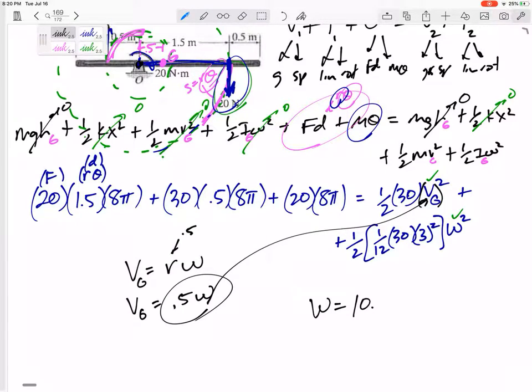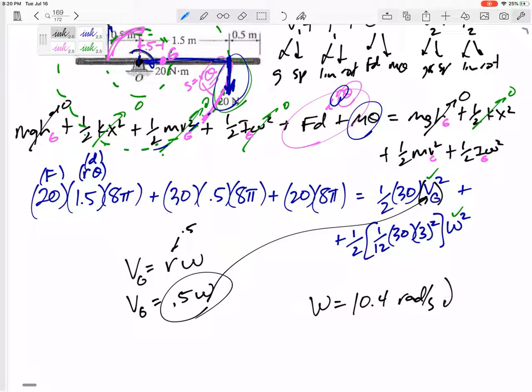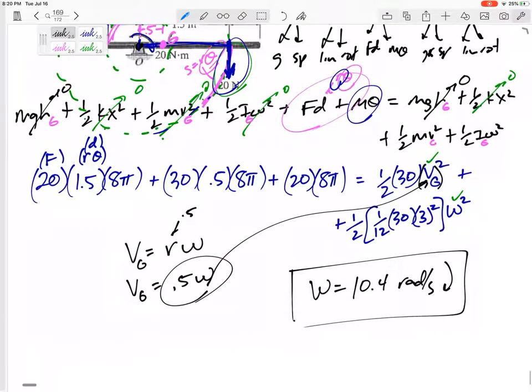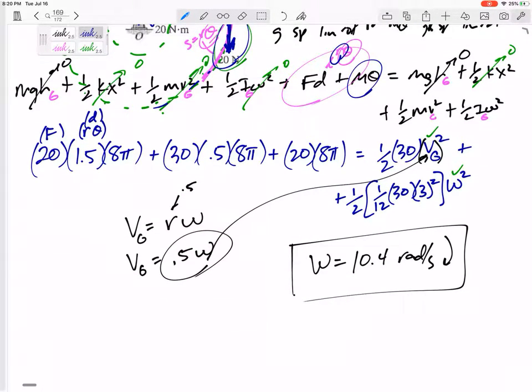I would get ω is 10.4 radians per second. I've got to visualize it. I think you can visualize that it's going clockwise. One thing I want to mention here: what if you did all this math and you got that ω² equals negative 70 or negative something?